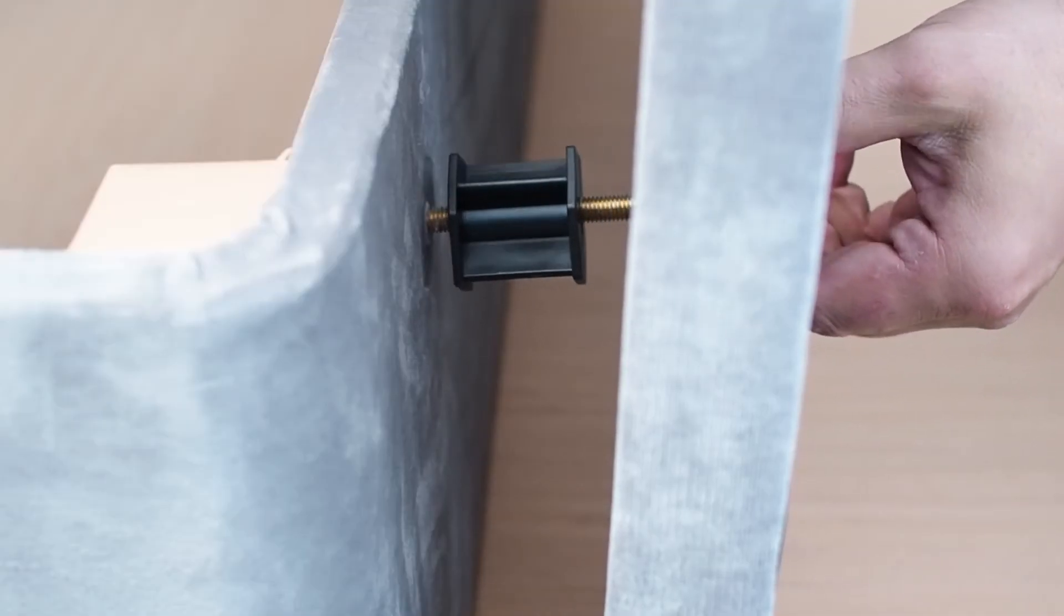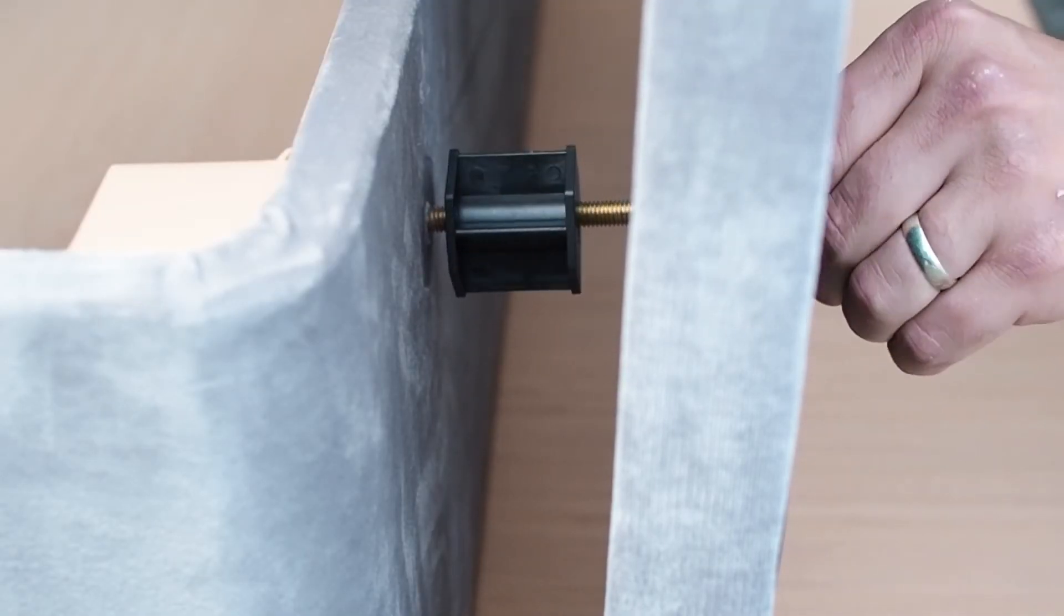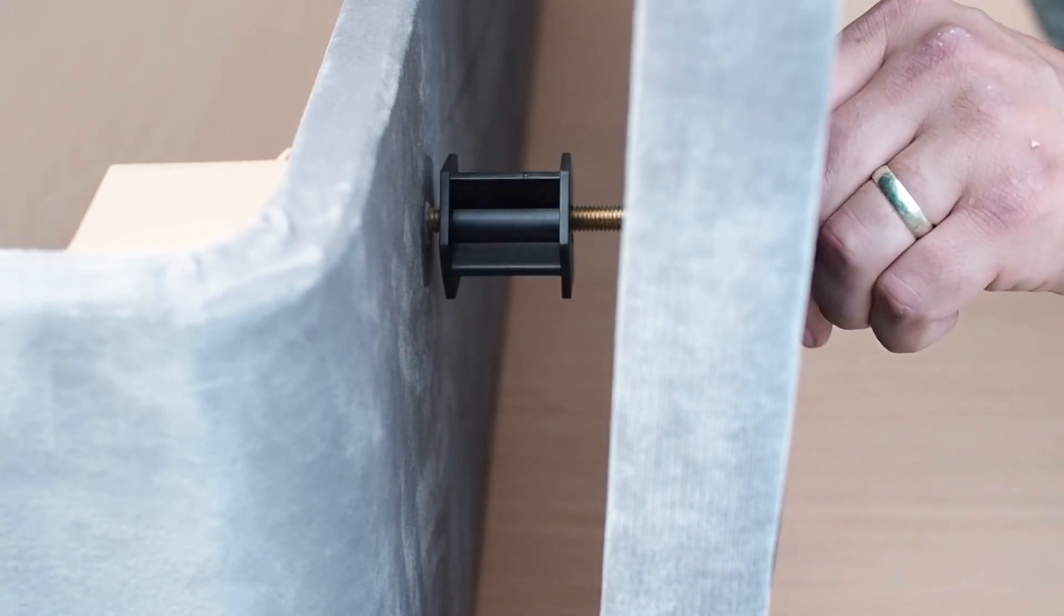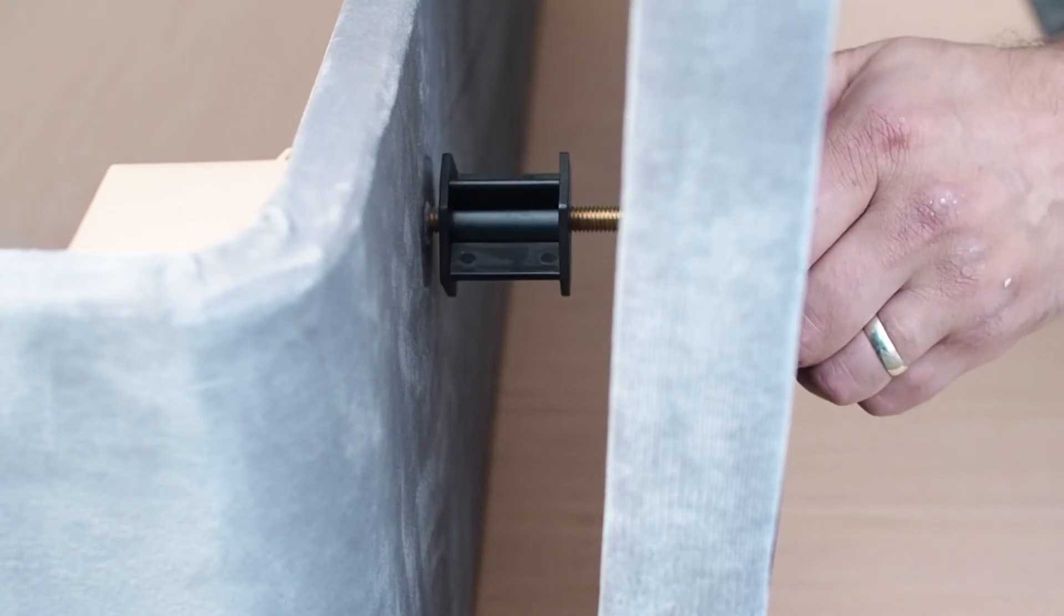Find the holes for the headboard bolts, marked with a sticker. Put the headboard bolt through the headboard slot. Locate the spacer between the base and the headboard. Insert the bolt through the spacer and tighten it in place.